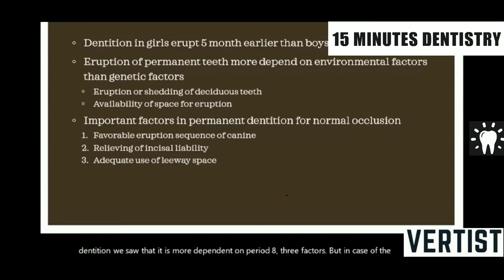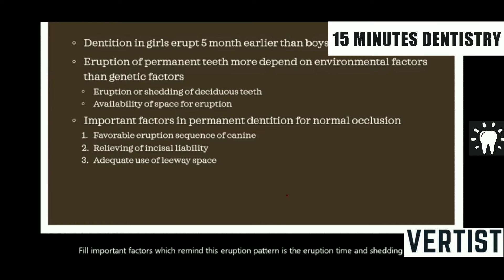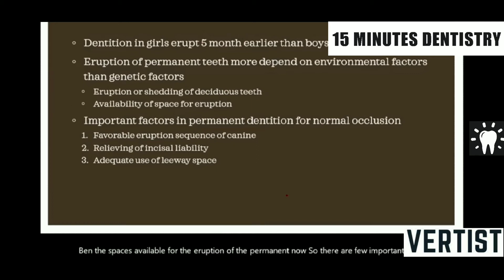A few important factors which determine the eruption pattern are the eruption time and shedding of the deciduous counterparts, and the spaces available for the eruption of the permanent teeth. There are a few important factors considered as ideal requirements for development of normal occlusion, including the favorable eruption sequence of the canine, as we saw.